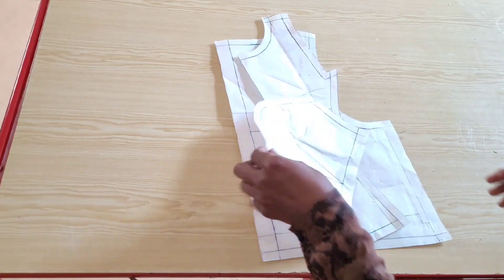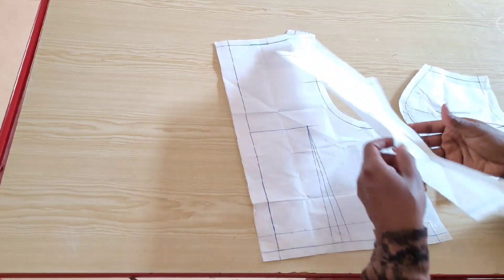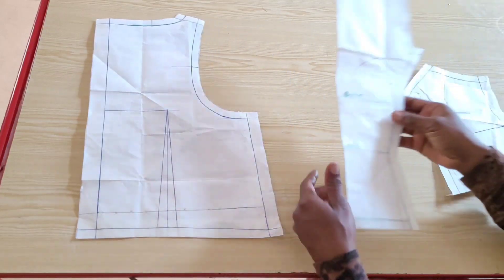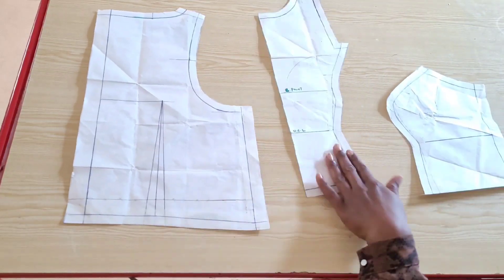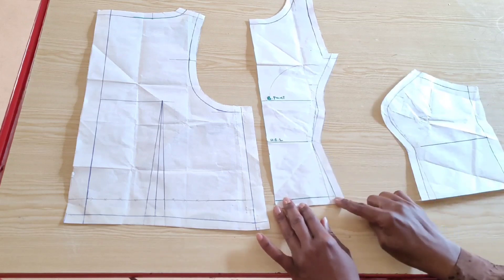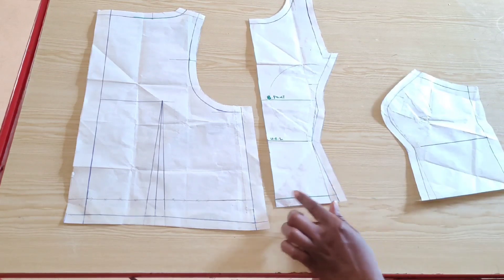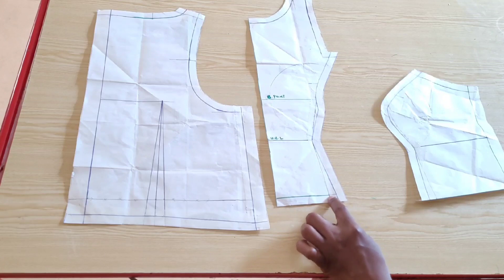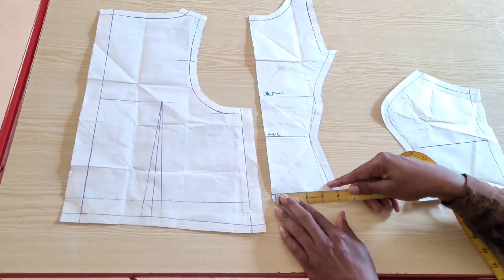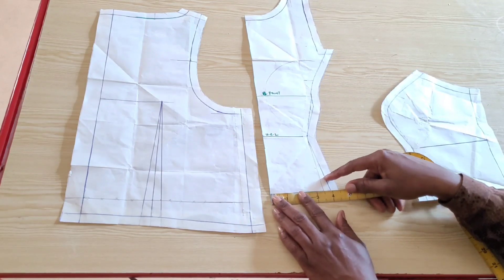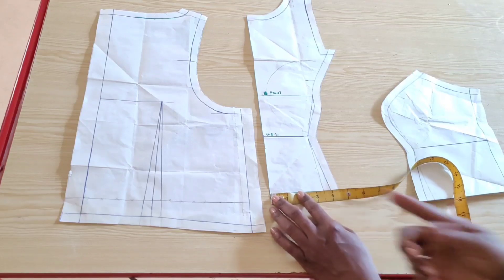So guys, I've cut out our pattern and I noticed that I included the darts while I was tracing out the contoured bodice on a fresh paper. The bust span I'm working with is eight inches, and half of that is four inches. And you can see that it's still at four inches, meaning that I included the half inch dart leg.